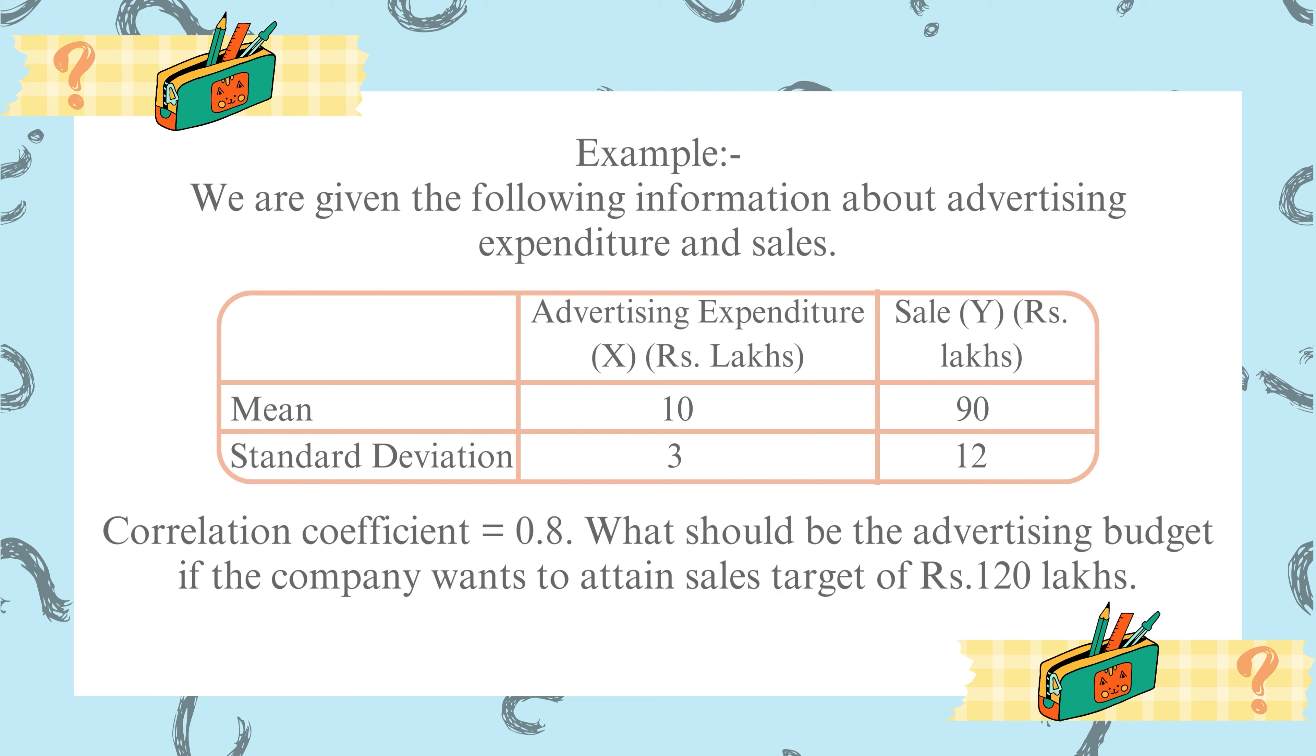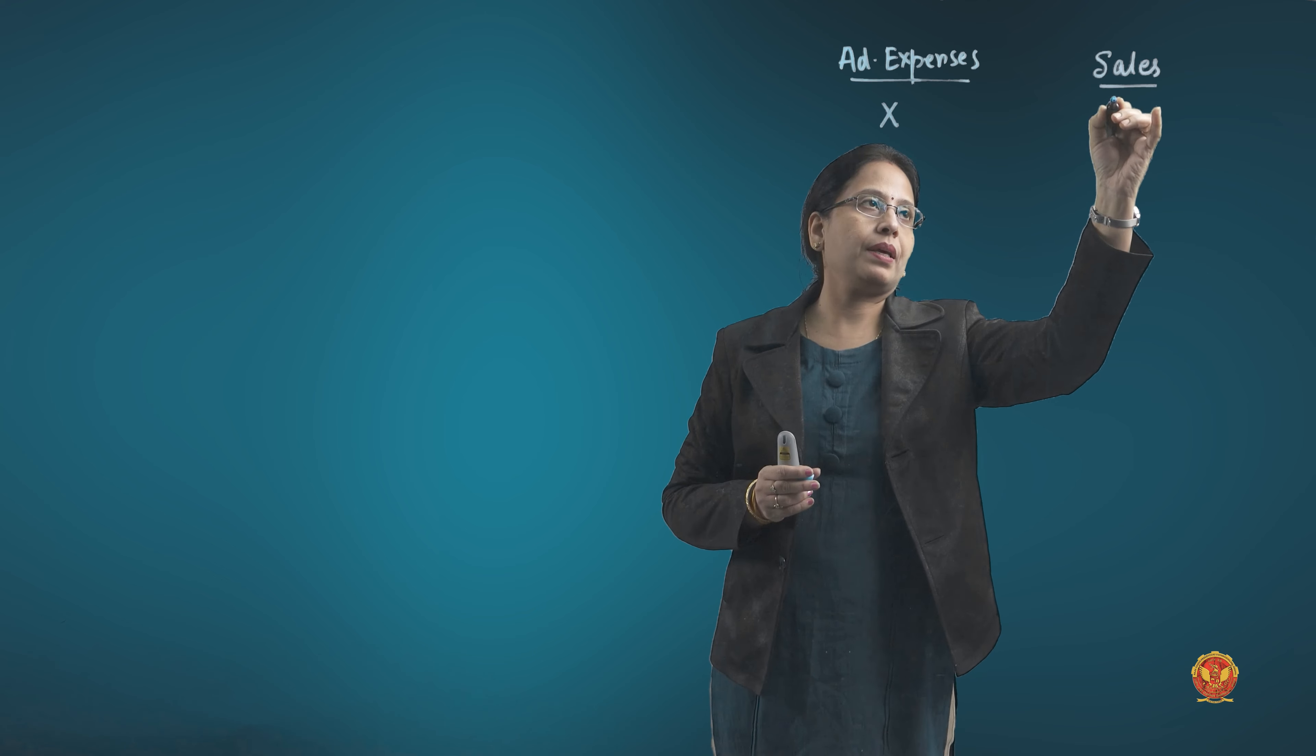Here you should note that advertising expenditure, they have given you the value x. In such cases, the numerical itself has given you advertisement expenses and they have denoted it with the variable x. And sales which depend upon advertisement expenses have been given the variable y.